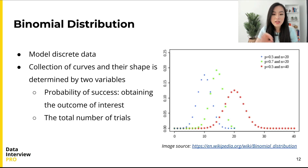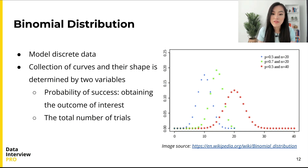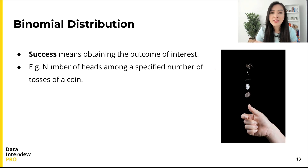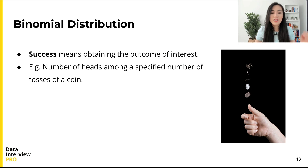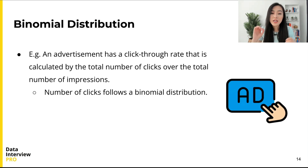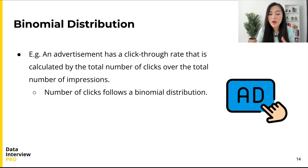Now let's move forward to another commonly used distribution: the binomial distribution, which is for discrete data. Like the normal distribution, the binomial distribution is a collection or family of curves. The shape of their probability mass function is determined by two variables: the probability of success p and the total number of trials n. A simple example would be the number of heads among a specific number of coin tosses. For a more practical example: an advertisement has a click-through rate calculated as the total number of clicks over the total number of impressions. What is the distribution of the total number of clicks?